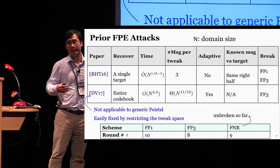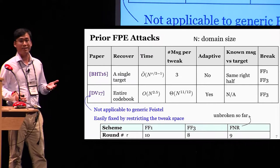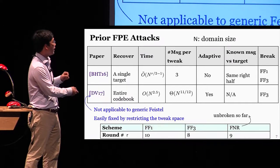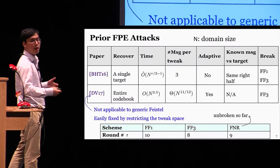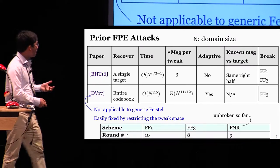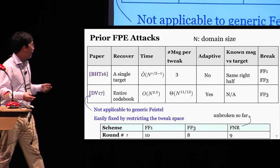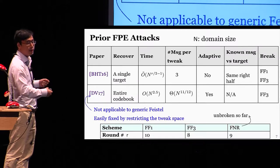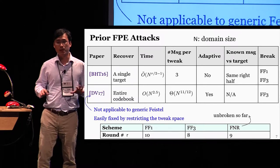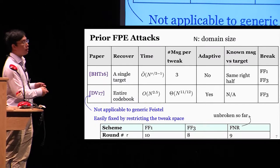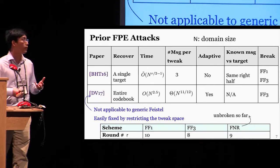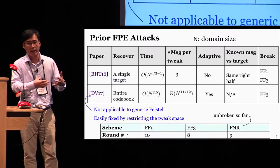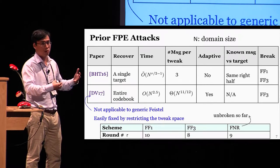There have been so far two complementary attacks on FPE schemes, and all of them focus on NIST standards. The most recent one is by Durak and Vaudenay, and by exploiting a bug in the round functions of FF3, they managed to recover the entire codebook, which prompted NIST to temporarily suspend FF3. However, this attack is not applicable to a generic Feistel structure and is easily fixed without hurting performance by restricting the tweak space. In a different direction, in my prior paper with Mihir Bellare and Stefano Tessaro, we show a message recovery attack on a generic Feistel, which applies to both FF1 and FF3. This attack can recover just a single target message, but it shows some inherent weakness in NIST standards, meaning that on a small domain you need more rounds to be properly secure.